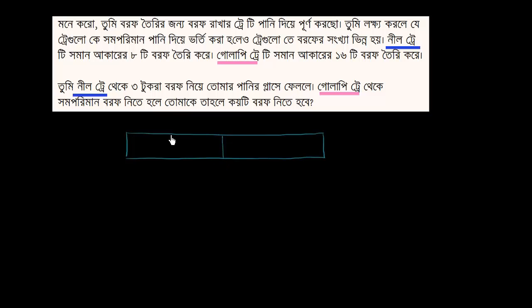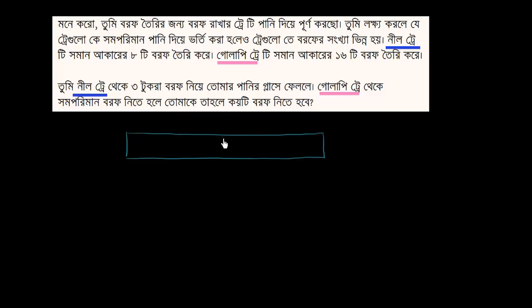ভাগে ভাগ করা যাক এজে এথা হলো তেটার অর্থেক তার পরে এথার আরো অর্থেক করা যাক। আর অর্থেক। আর তার অর্থেক আতি শমান মাবর বরফ নি এথি হলো নীল তেটি।